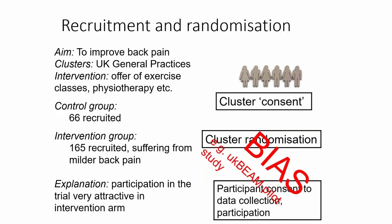What they found was that because patients were recruited after the practices had been randomised, and those recruiting knew whether they were in the intervention or control group, there were actually more than twice as many individuals recruited in the intervention group than in the control group. In the intervention group, those recruiting knew patients would get what they considered an attractive intervention. The patients recruited to the two groups were not comparable — those in the intervention group were suffering from much milder back pain.